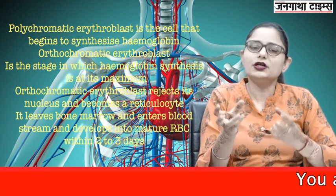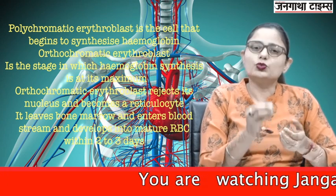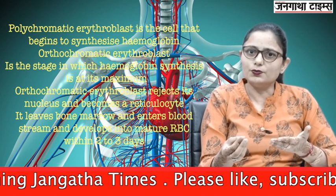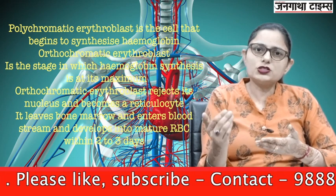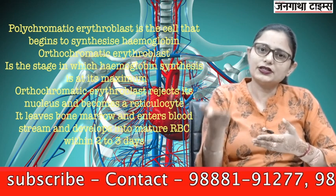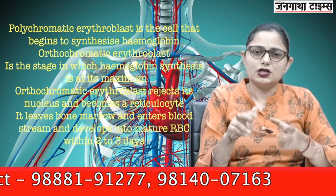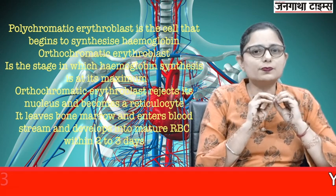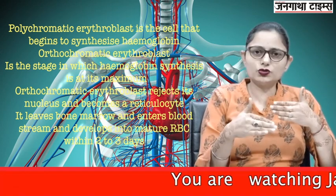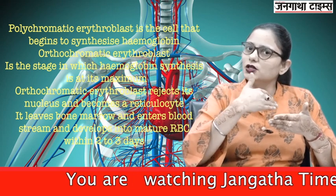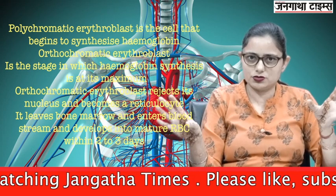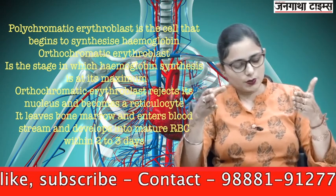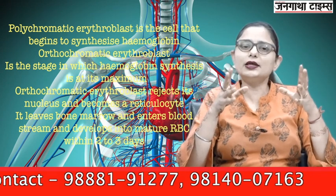Hemoglobin is the red-colored pigment present in the blood that gives it color. The polychromatic erythroblast gets converted into orthochromatic erythroblast, where hemoglobin synthesis reaches its maximum. After this stage, the nucleus is ejected — the nucleus goes out — and what is formed is the reticulocyte, which is an immature RBC.